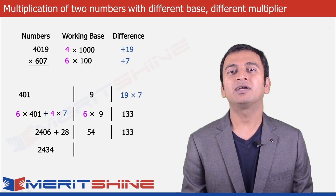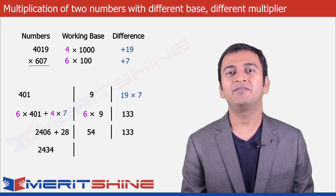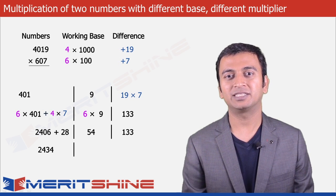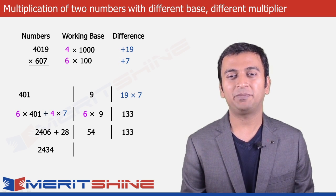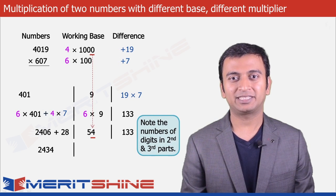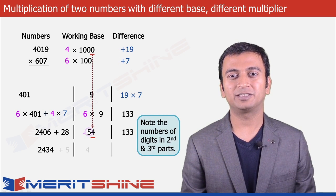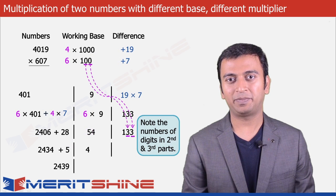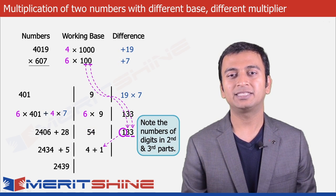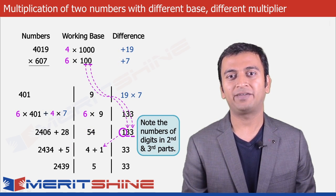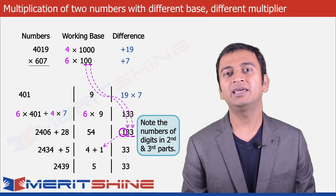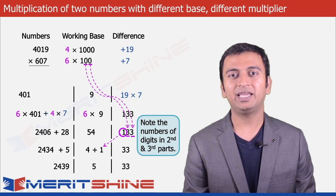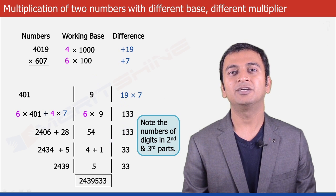Now before clubbing all three parts and getting our final answer, we will have to take care of the number of digits in each part. In the second part we can have only one digit. The extra 5 will be carried over to the first part making it 2434 plus 5, giving 2439. And the extra 1 in the third part will be carried over to the second part, making 4 plus 5, and we will be left with 33 in the third part. Now we can club these three and get our final answer as 2439533.